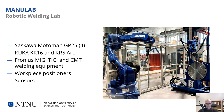The robotic welding lab comprises a total of 5 work cells with Yaskawa Motoman and KUKA robots, all equipped with Fronius welding equipment. In the picture on the right, you see the current setup in our largest work cell. This work cell is equipped with two Yaskawa Motoman GP25 arc welding robots, where one robot is mounted on a linear rail together with a 5-ton workpiece positioner. Both robots are equipped with optical sensors and cold metal transfer welding tools.